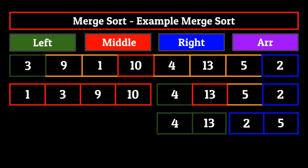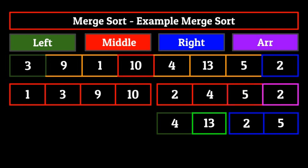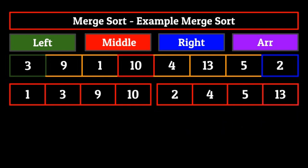Now let's pick up the pace. We set up our indexes and start by comparing four and two. Two is less than four, so we replace the first index of the main array with two and increase the indexes on the main and right arrays. Then we compare four and five: since four is less than five, that's the number written as the second element. Increasing indexes leads us to compare five and thirteen: five is less, so we copy that in as the third element. Since we have reached the endpoint of our right array, we copy the remaining elements of the left array into the main array. We have concluded our merge of the right and left sub-arrays, and can delete our two temporary arrays.